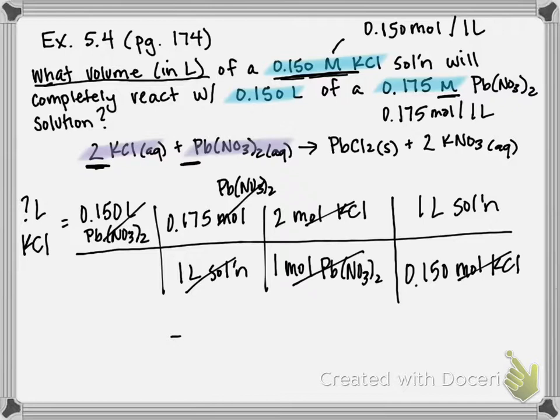So then I'm going to multiply all my values on top and divide those by my values on the bottom. And your final answer should come out to be 0.350 liters of KCl. And that is your final answer.